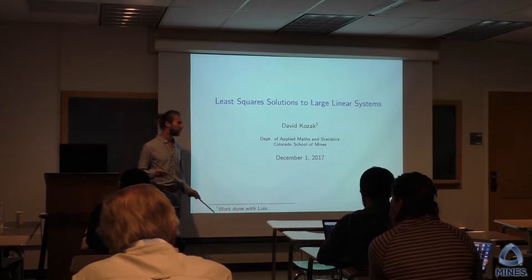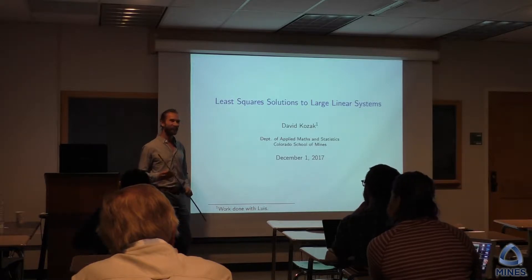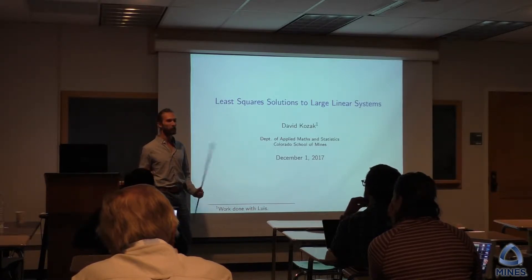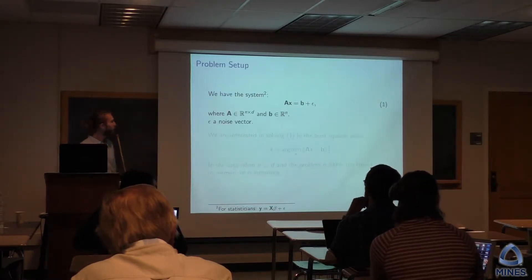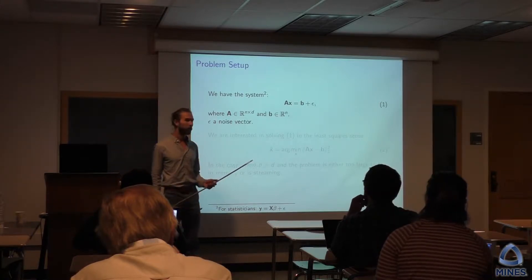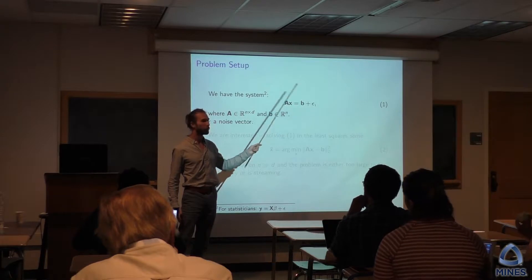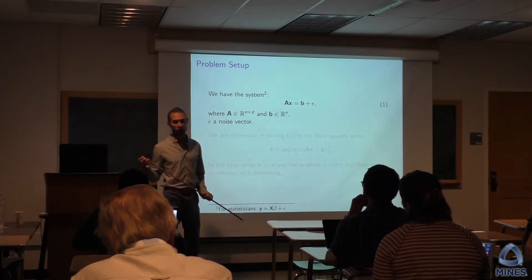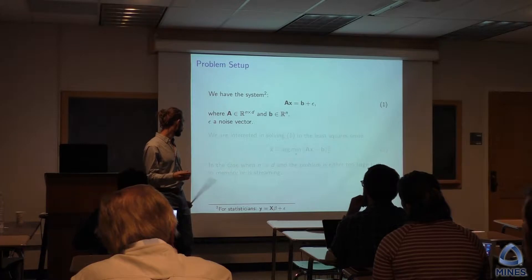I'm going to give the talk in a slightly strange order in that I'm not going to motivate anything until the end. That's because I might run out of time, and if I do, I'd rather you lose the motivation than you lose the content. So as the title suggests, it's a linear system that I'm working with. It's made inconsistent by virtue of this epsilon. And if you're a stats student, you probably think of it more as a regression problem.